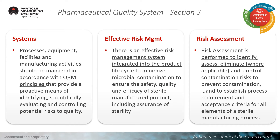Within your pharmaceutical quality system, you must have three elements. First, systems and procedures that govern your quality risk management program. Second, an effective risk management system with tools to assess risk. And lastly, formal risk assessments that are documented in order to ensure that you are managing these risks appropriately.